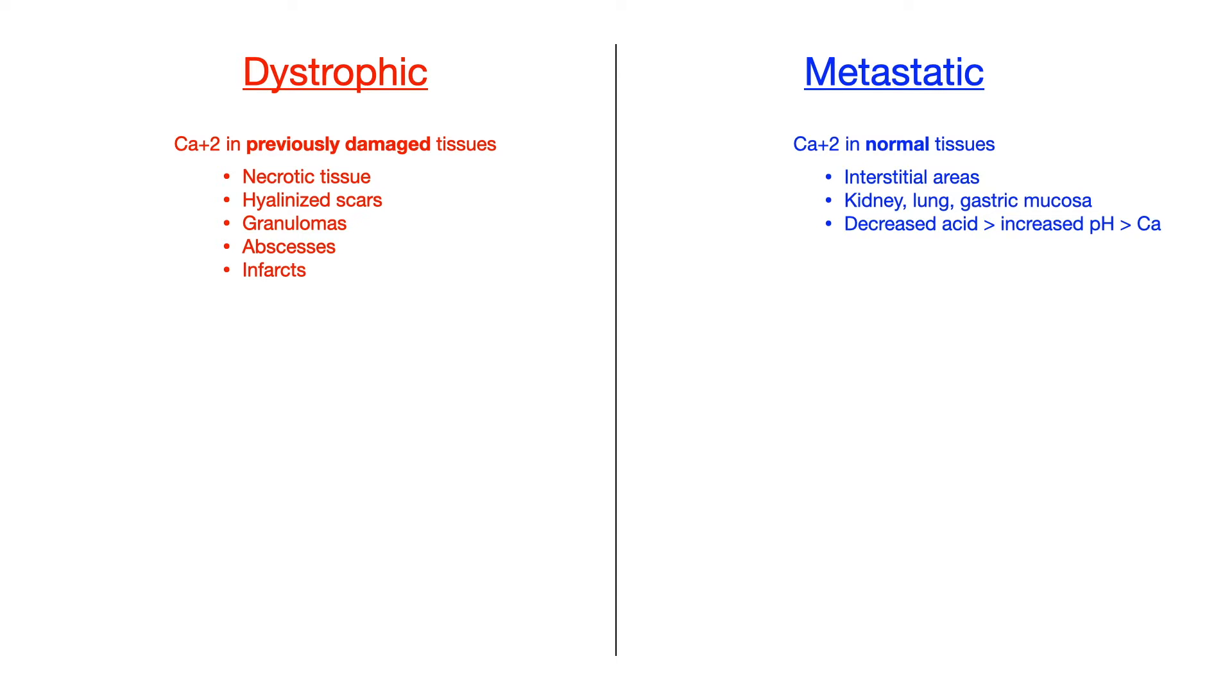In metastatic calcification, because that calcium is being deposited in otherwise normal tissues, we tend to see this in interstitial areas. Specifically, we see it in the interstitial areas of organs like the kidney, the lungs, the gastric mucosa, and blood vessels.